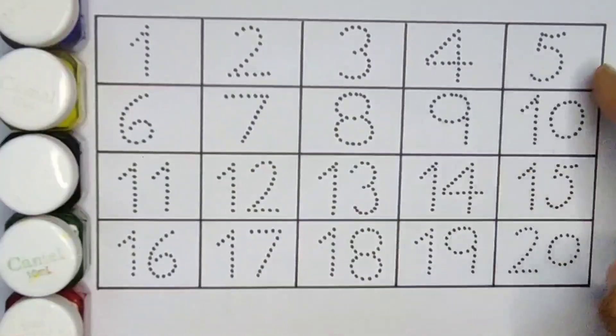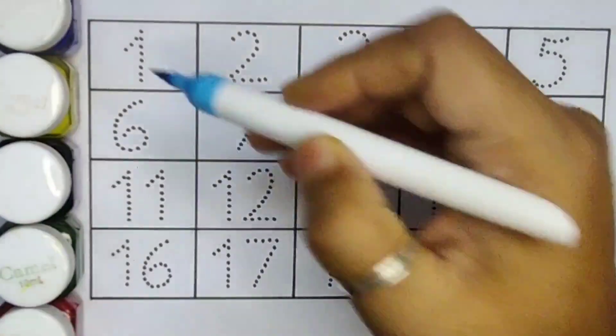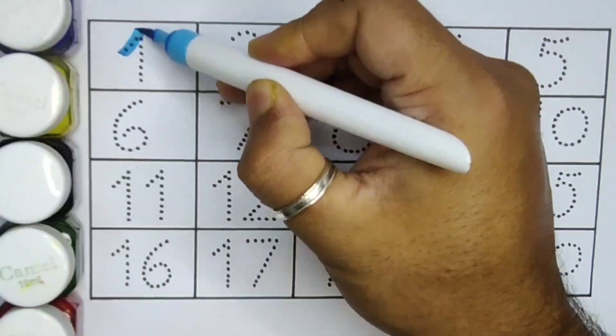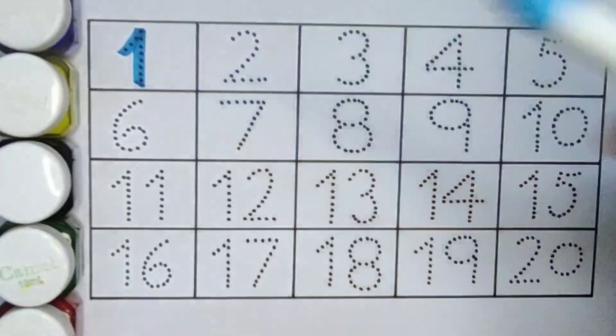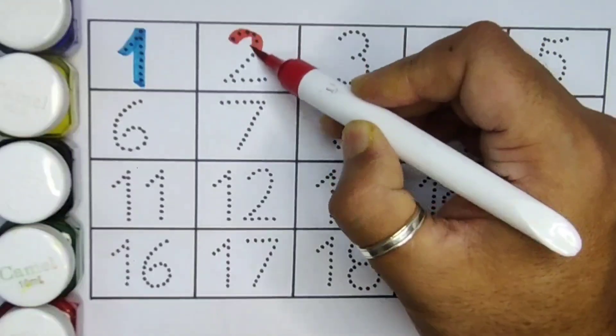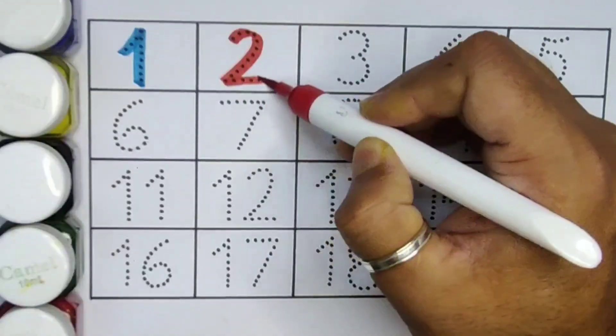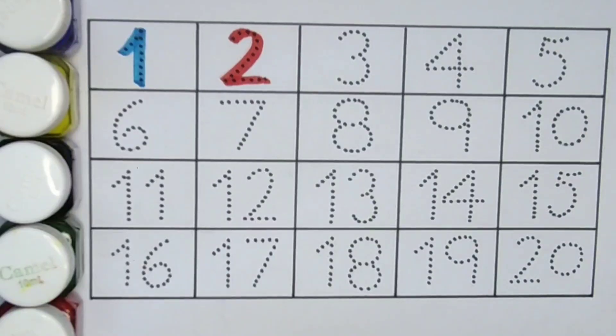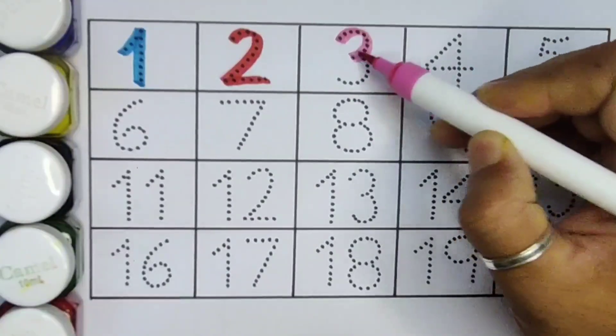Now let's learn the numbers counting 1 to 20. First one, number 1. Next kids 2. Number 2. Next 3. Number 3.